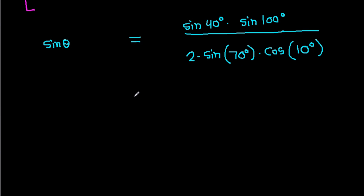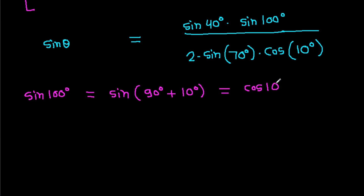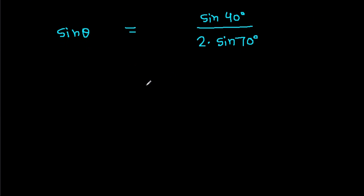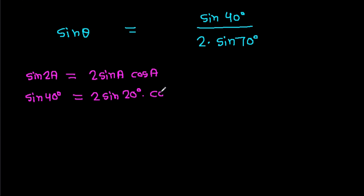Now sin 100 degrees equals sin(90 plus 10) degrees, that will be cos 10 degrees. So sin 100 degrees and cos 10 degrees cancel, and we get sin theta equals sin 40 degrees over 2 times sin 70 degrees. Using sin 2A equals 2 sin A cos A, sin 40 degrees equals 2 sin 20 degrees cos 20 degrees over 2 times sin 70 degrees.